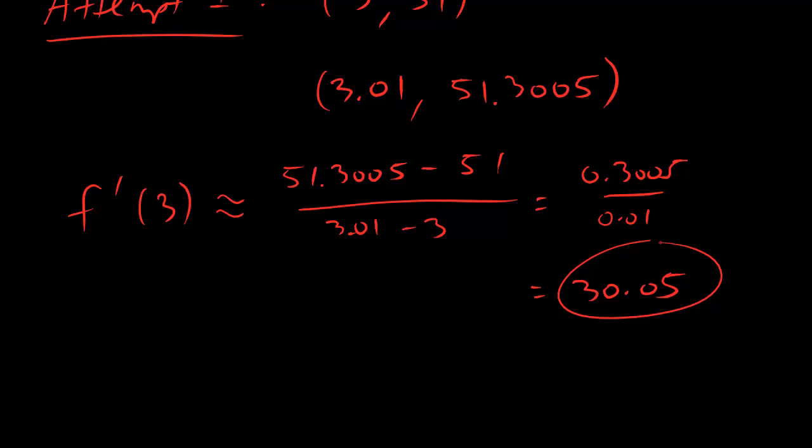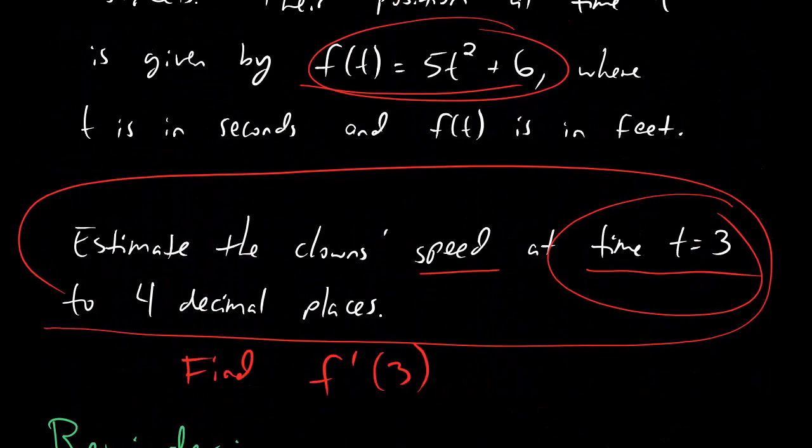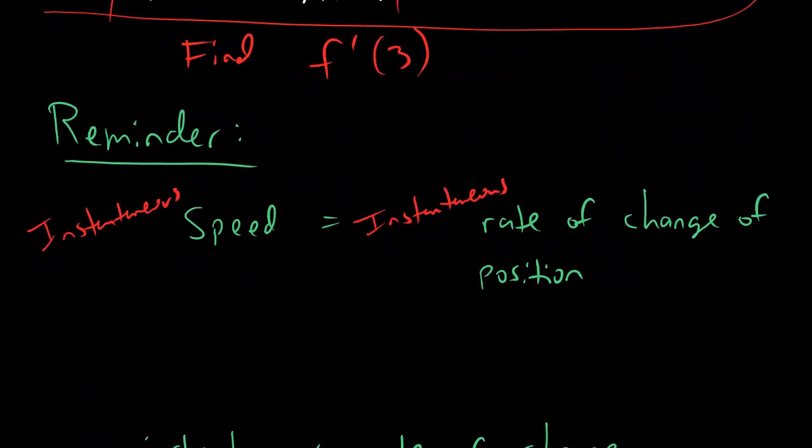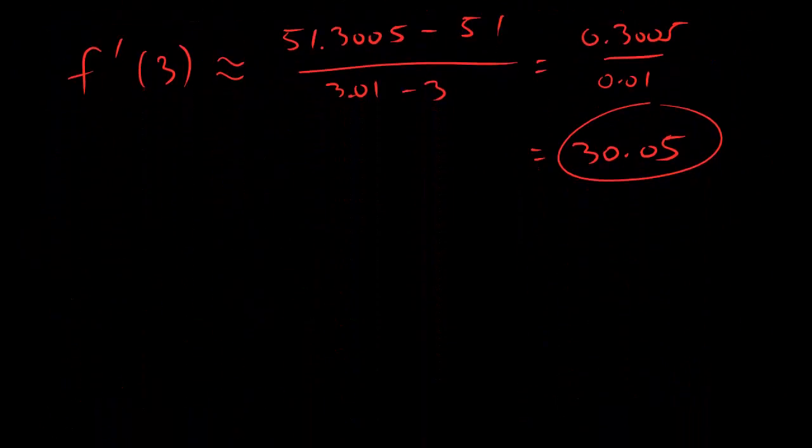Alright, so that's a pretty good answer. Our derivative is approximately 30.05. But dudes, if we're asked to find it to four places of accuracy, which if you scroll all the way back up here, is exactly what it said, we're asked to estimate it to four decimal places. Then what we need to do is not stop there. We can't stop with this number 30.05. We've got to keep going using an even closer point, and we're going to see what happens. So let's write down attempt two.